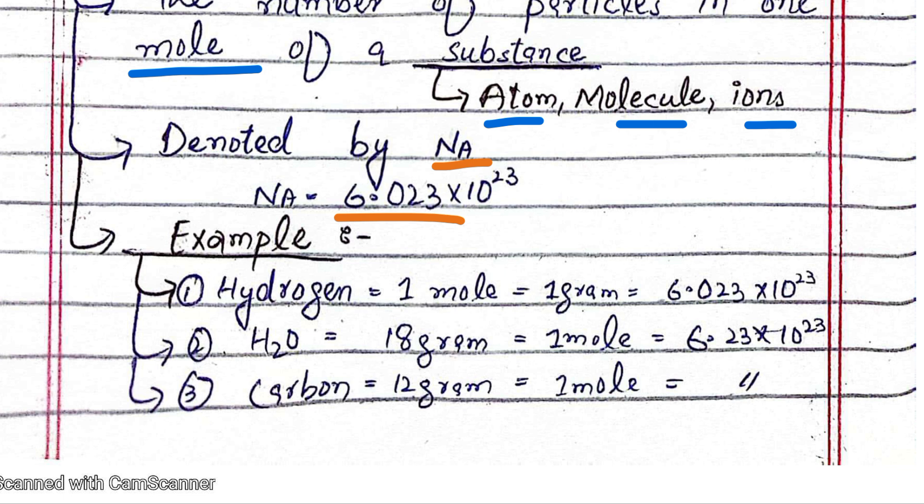For example, hydrogen: 1 mole equals 1 gram of hydrogen, which contains 6.023 × 10^23 particles of hydrogen.